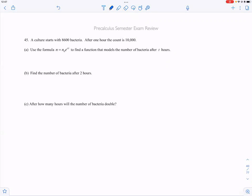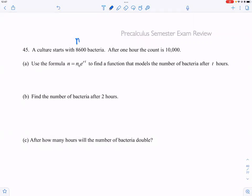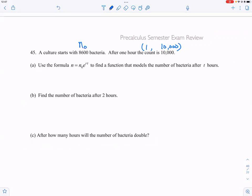All right, for question 45 it's pretty similar to the previous question. We have the initial bacteria population 8600, and then after one hour, so when time is equal to one, population is 10,000, going pretty fast.